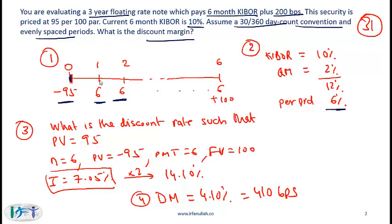So per period the payment is 6% of 100, that's what gives us 6. So the payment is 6, 6 all the way through till the end of year 3. And then the par value of 100 is returned.